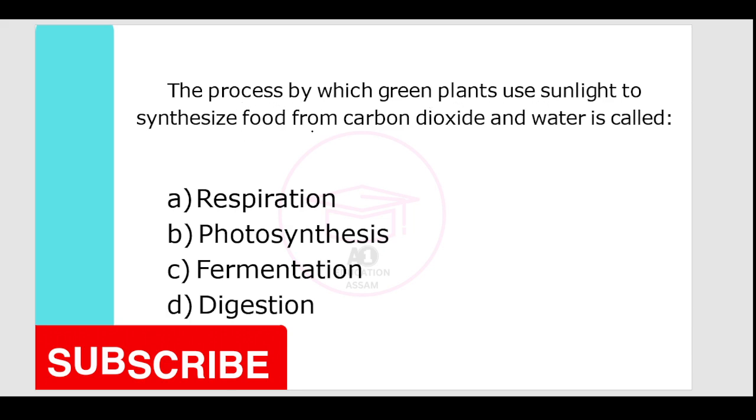The process by which green plants use sunlight to synthesize food from carbon dioxide and water is called? Options are respiration, photosynthesis, fermentation, digestion. Your correct answer is option B, photosynthesis.